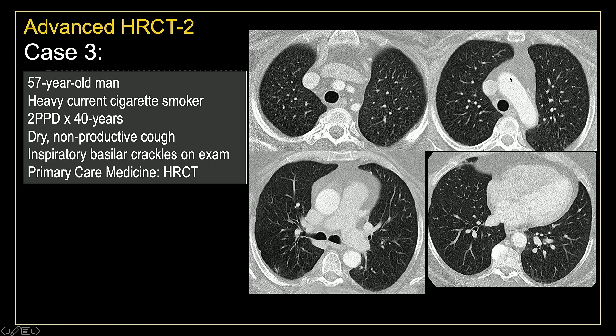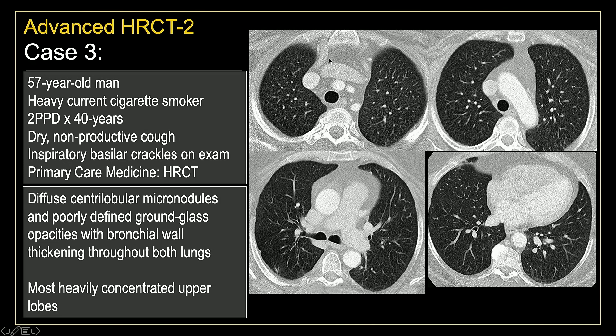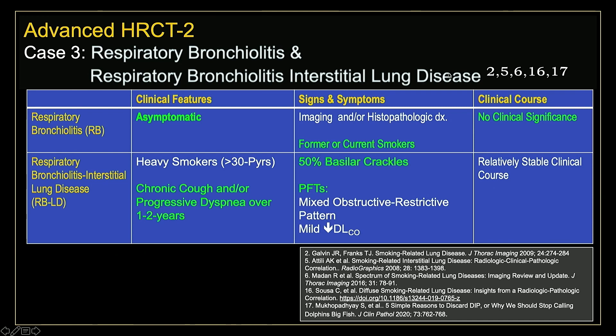Our third case is a 57-year-old man, heavy cigarette smoker, smoking two packs a day for the last 40 years. He has a dry non-productive cough, inspiratory crackles at his bases on physical examination, and primary care medicine sent him for an HRCT. There are diffuse centrilobular micronodules with very poorly defined margins, and concomitant regions of bronchial wall thickening. Lower lobes are relatively spared; upper lobes are more heavily involved. In this clinical scenario, this is typical of what we expect to see with respiratory bronchiolitis and respiratory bronchiolitis interstitial lung disease.